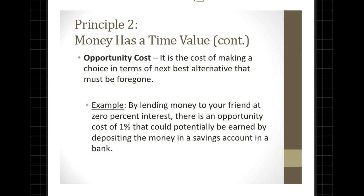A second reason is that we need to acknowledge the opportunity cost — in this case, the opportunity cost of funds or money. Opportunity cost is an economic term that represents the cost of making a choice in terms of the next best alternative that must be foregone. An example would be that by lending money to your friend at 0% interest, there is an opportunity cost of 1% that could potentially be earned by depositing the money in a savings account at a bank. You would hesitate to lend the money to your friend because the alternative is that foregone 1% interest you could have been earning.